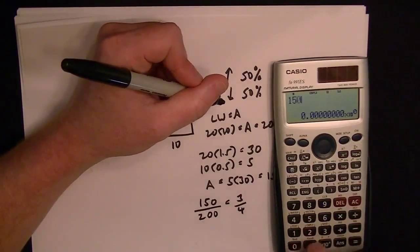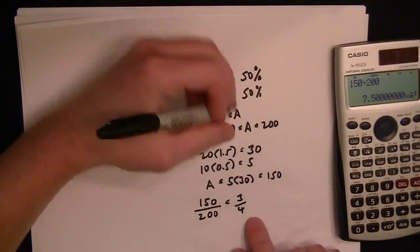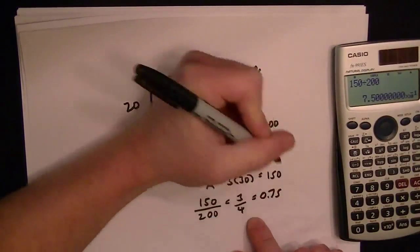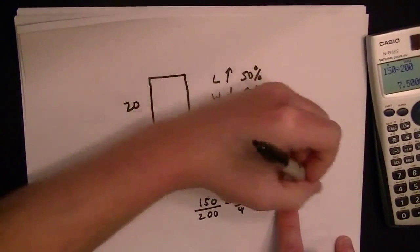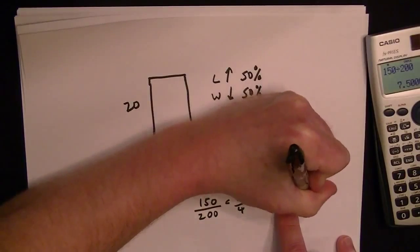If you had a calculator, you could just take 150 divided by 200, which gives you 0.75. In percentage terms, you move that decimal over two places.